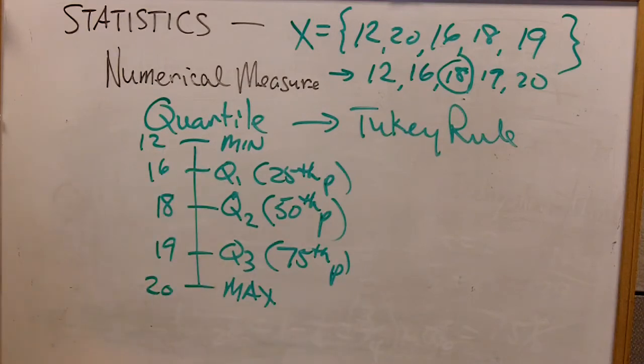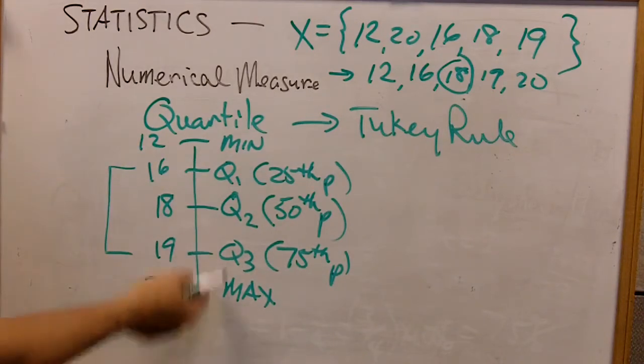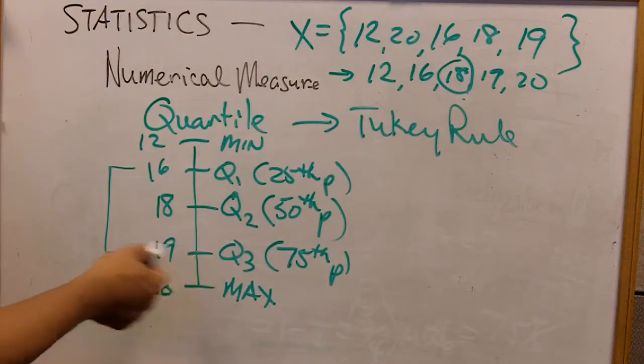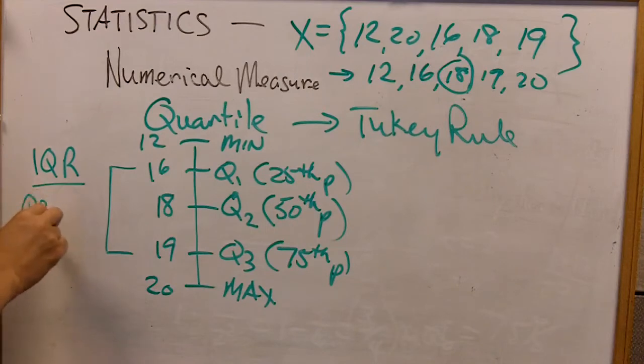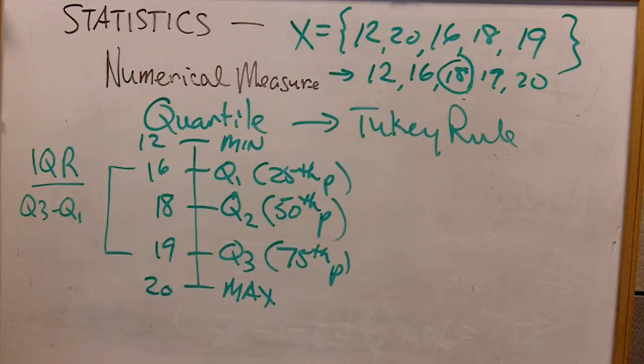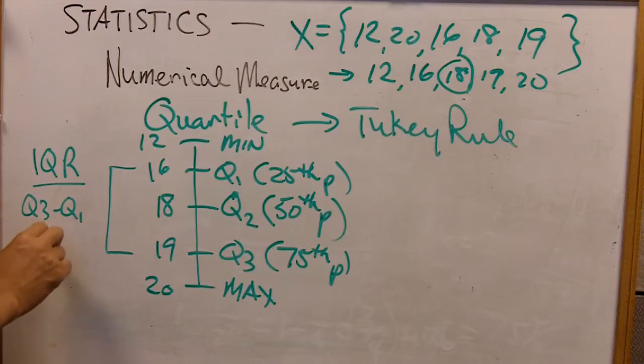So with all of this five-point summary, we know how big the spread is. The range is about $20 minus $12, that's $8, but we also want to not be influenced by extreme values, if there are extreme values. So we're only looking at the center 50%, so the IQR, inter-quartile range, is defined as Q3 minus Q1. And it's equal to 19 minus 16, which is equal to 3.